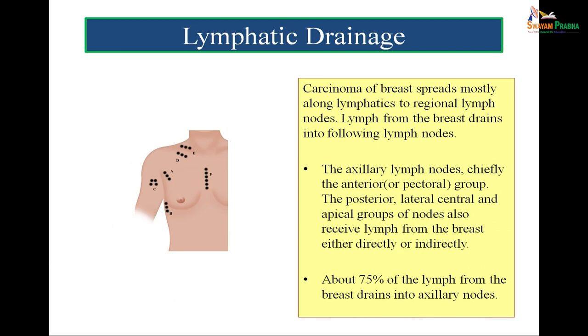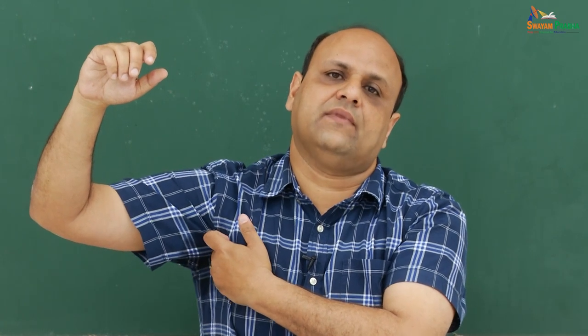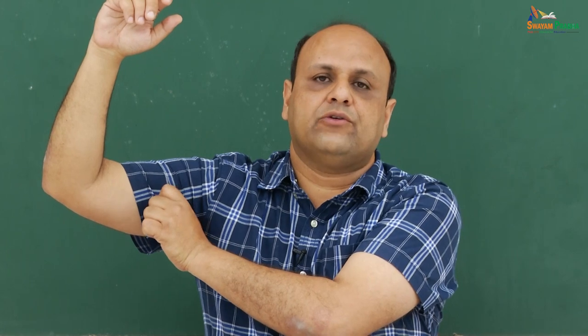Carcinoma of the breast definitely spreads by lymphatics. 75% of the lymph from the breast is drained by the axillary lymph nodes. There are two organs whose carcinoma spreads prominently by lymphatics: one is the breast, the other is the stomach. The most important in the axillary group is the anterior group of lymph nodes, which lies in relation to the anterior fold of axilla. Then we have the posterior group, the lateral group lying in relation to the upper part of the humerus, the central group in the fat of the axilla, and the apical group lying below the clavicle.